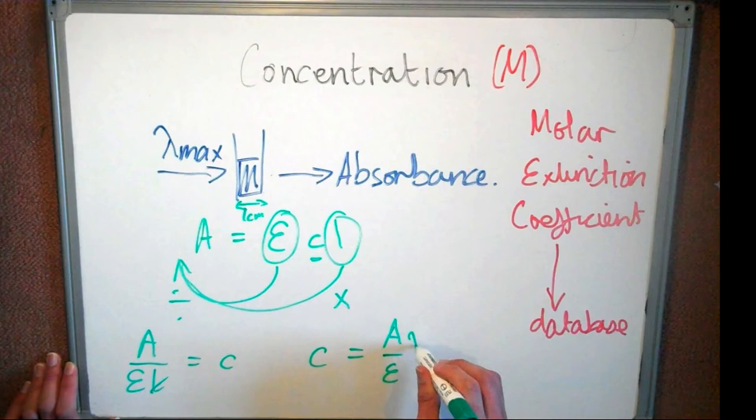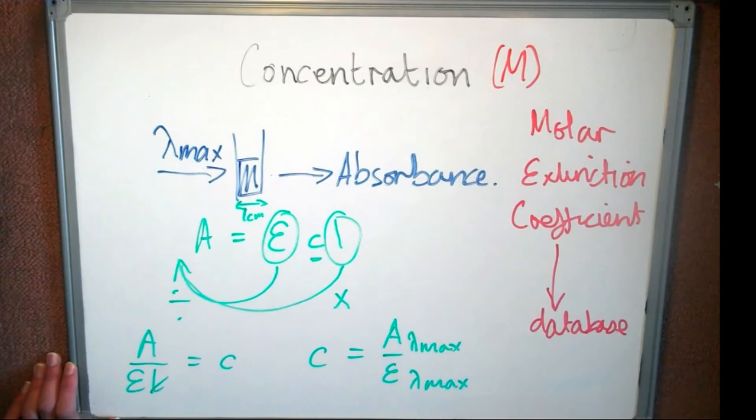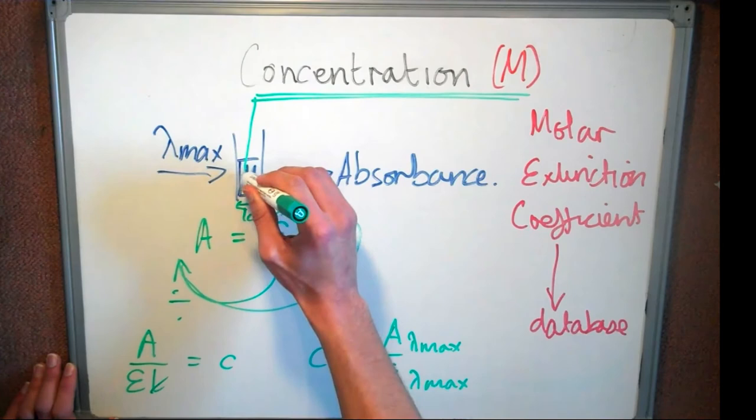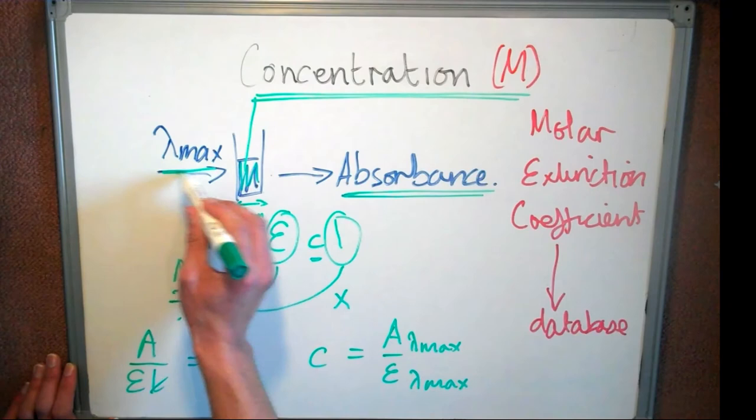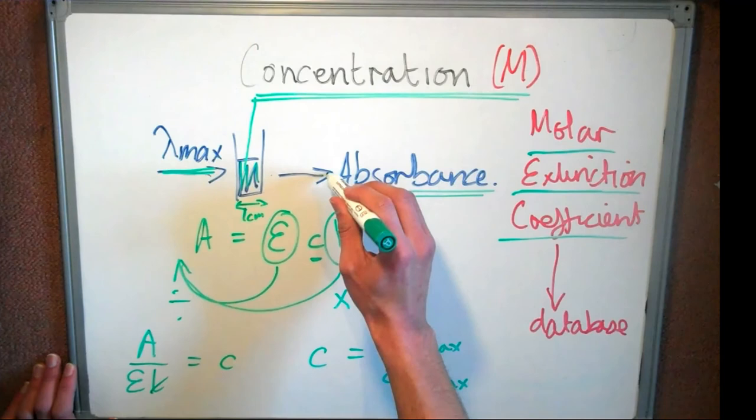So to summarize, we can calculate the molar concentration of a known compound in solution by measuring the absorbance at lambda max, if we know the molar extinction coefficient, as we can plug these values into our rearranged equation to find concentration.